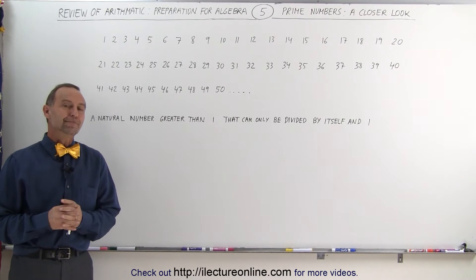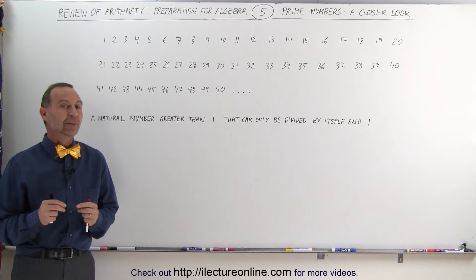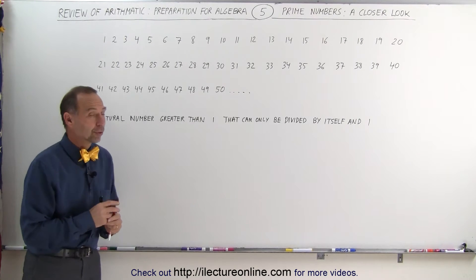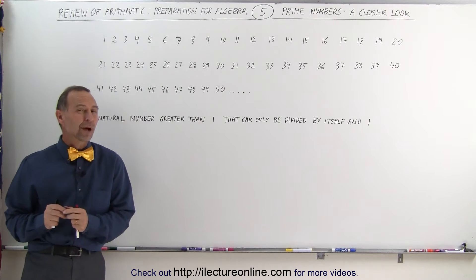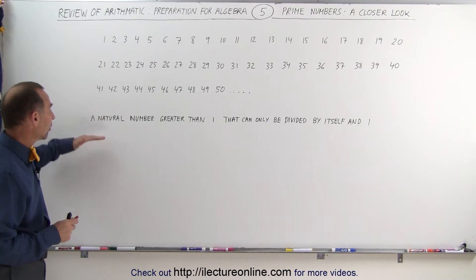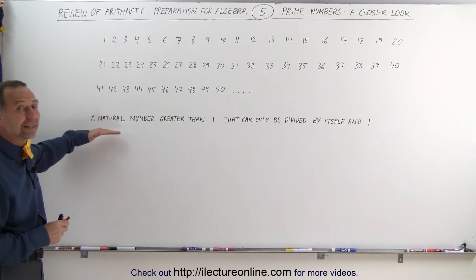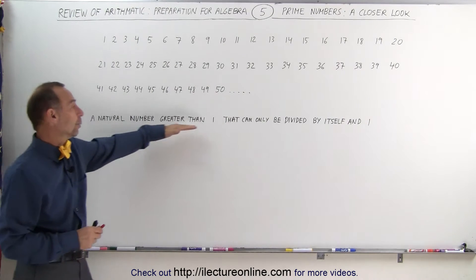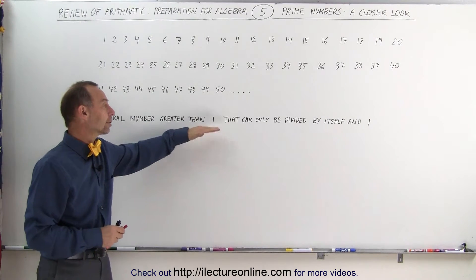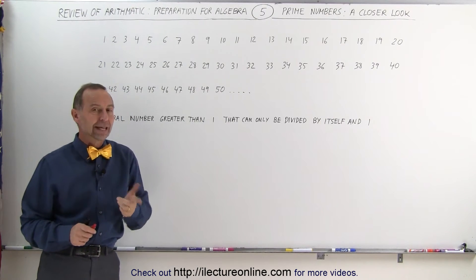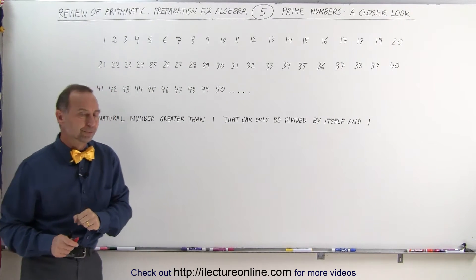Welcome to Electron Line. Now let's talk about prime numbers. What is a prime number? By definition, a prime number is a natural number greater than 1 that can only be divided by itself and 1.